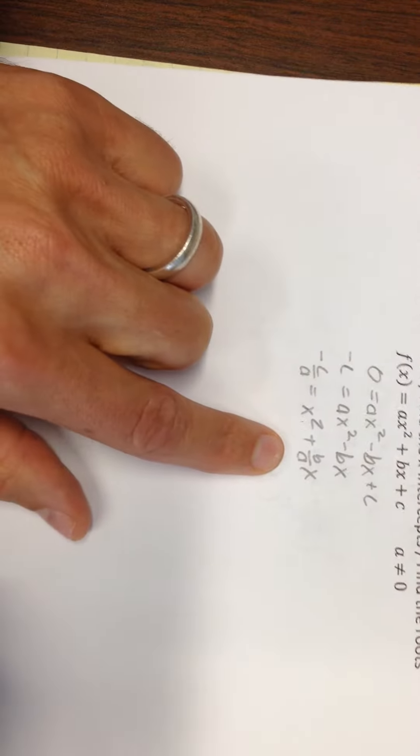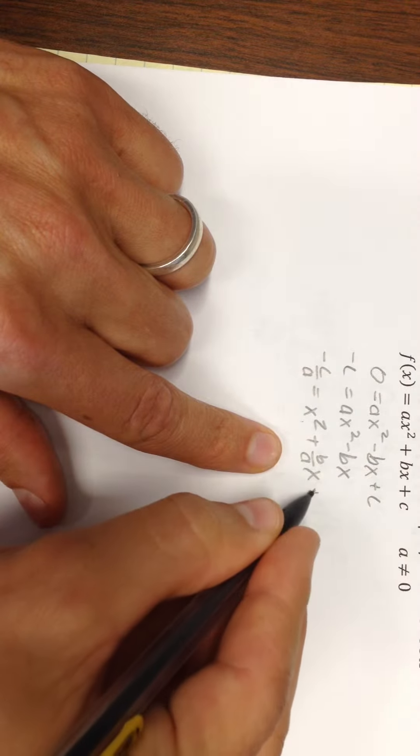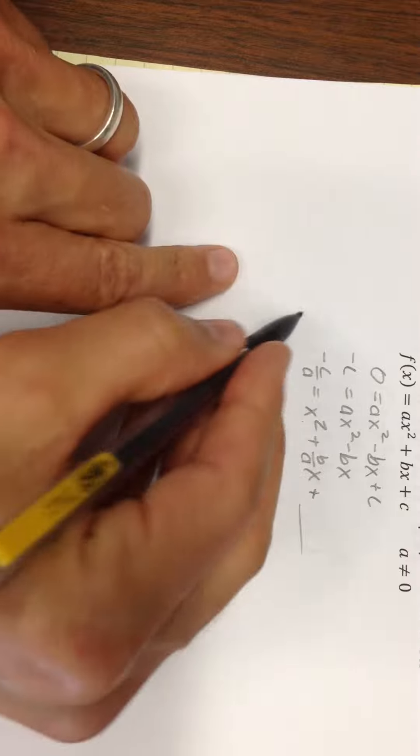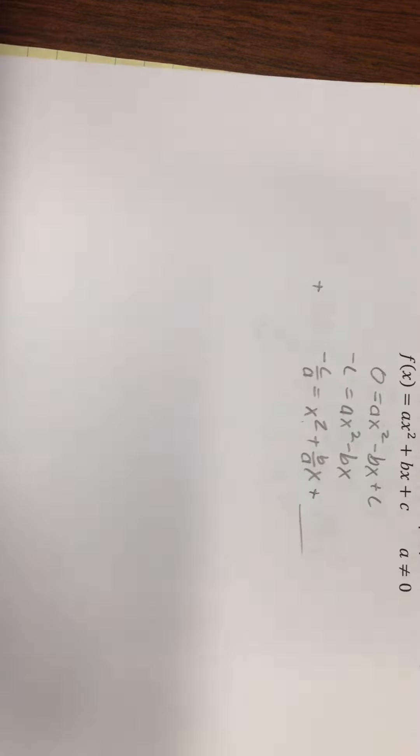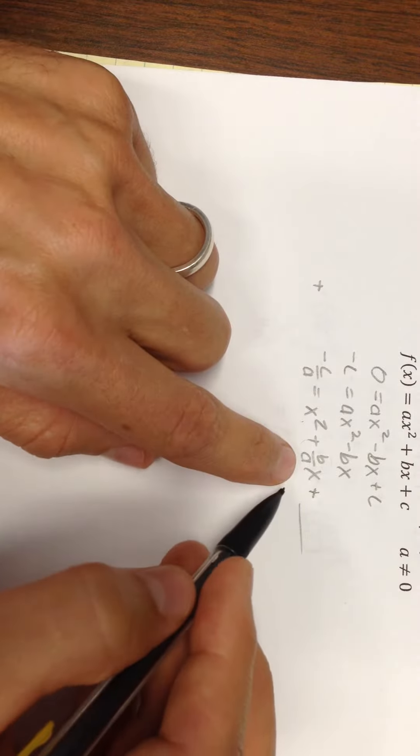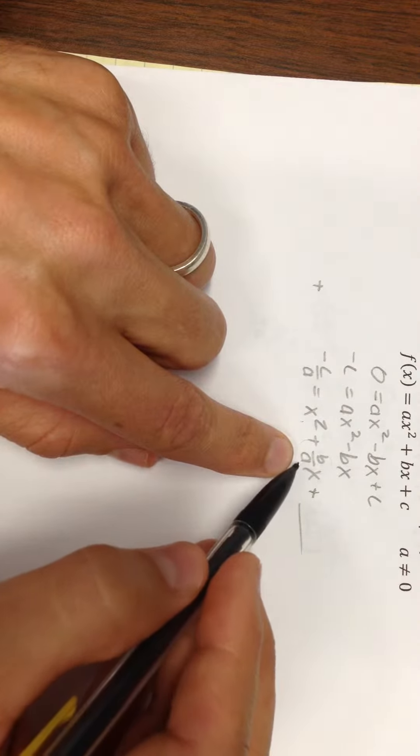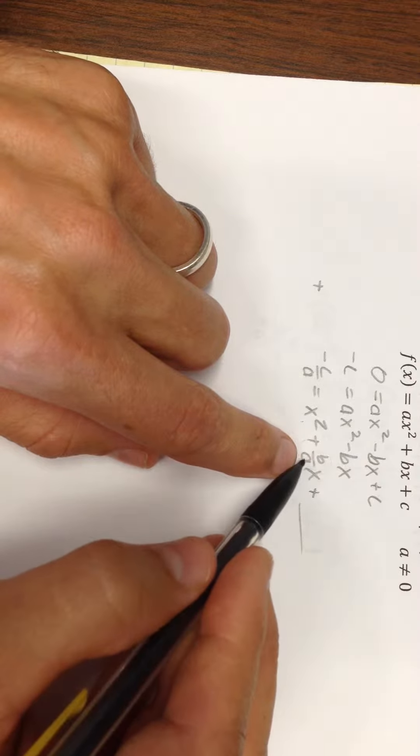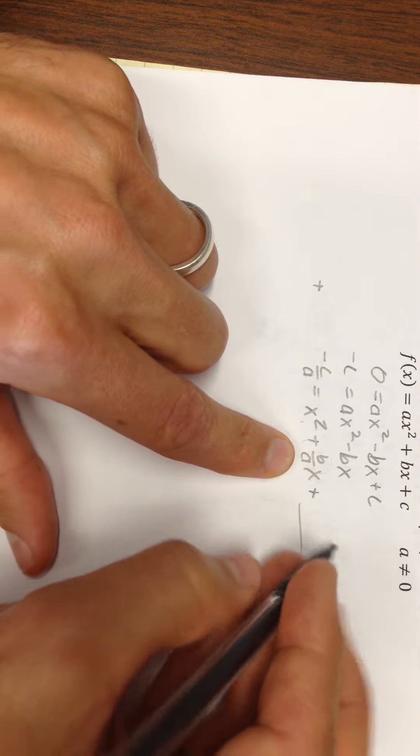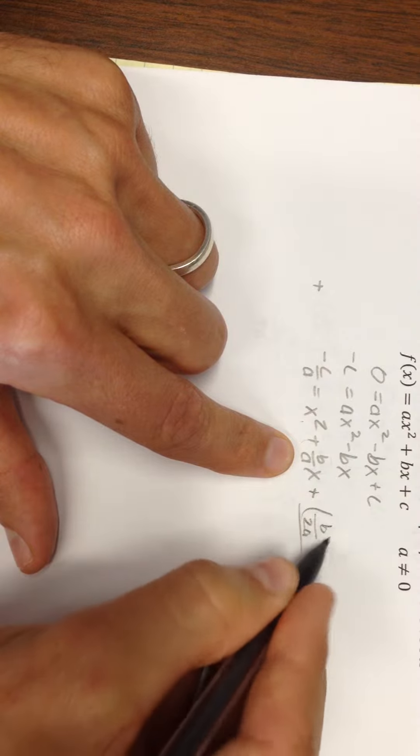Now I'm going to have to use a technique called completing the square here. So I'm going to add something to this side. To keep it equal I'll add it over here also. And it's needed to make this a perfect square. Now I take this b/a and I take half of it then square it. How do I divide b/a by 2? I multiply by 1/2. So (b/2a)².